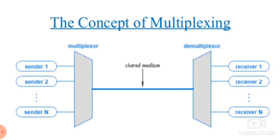Time division multiplexing, also called TDM, is used to improve channel utilization. We have analog TDM. In this diagram, sender 1, sender 2, through sender n — more than one sender at the input side — all share a single medium between the multiplexer and demultiplexer. At the demultiplexer side, sender 1's information is received by receiver 1, sender 2 by receiver 2, and so on.